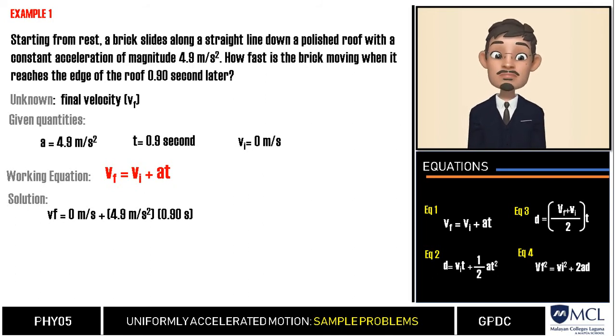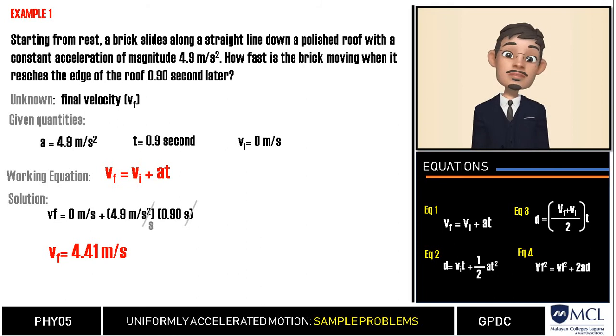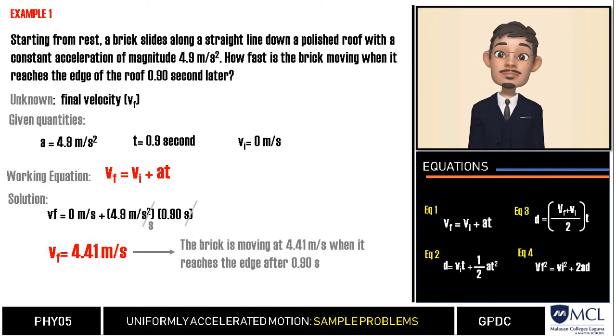In this case, we will cancel the unit second which leaves us meters per second only. We perform the operations using our calculator and our final velocity will be 4.41 meters per second. Therefore, we can say that the brick is moving 4.41 meters per second when it reaches the edge after 0.92 seconds.